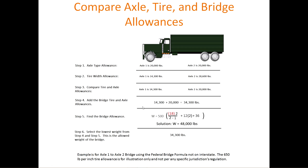In step four, we add the bridge, tire, and axle allowances. In this example, we're going from bridge one to bridge two, so we add those allowances — the result is 34,300 pounds. In step five, we find the bridge allowance using the Federal Bridge Formula, plugging in the number of axles and the distance between them — the result is 48,000 pounds. In step six, we select the lowest weight from step four and step five — this is the allowed weight of the bridge.